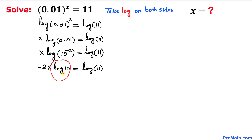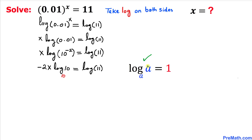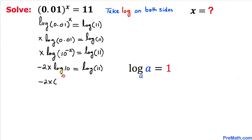Now let's focus on log of 10. We can see that its base is missing — such a log is called a common log, whose base is 10 by default. Recalling the logarithmic property: as long as the argument and the base are the same, the result is always 1. Therefore log base 10 of 10 equals 1, so we can write negative 2x times 1 equals log of 11.